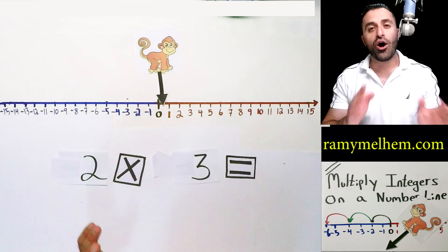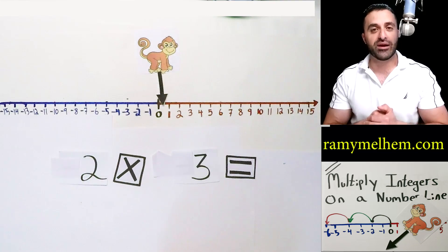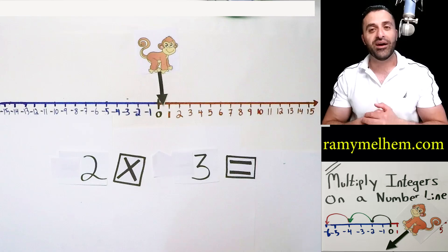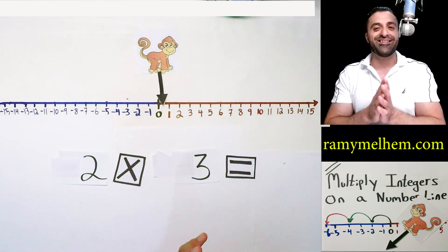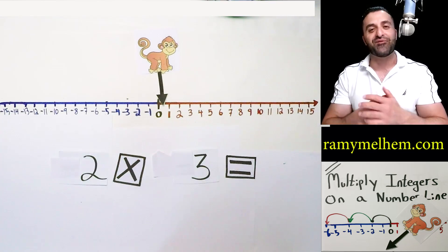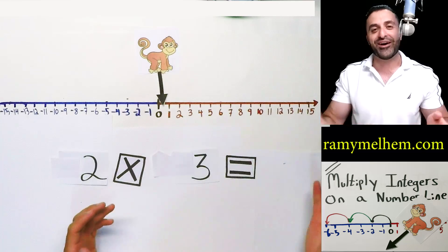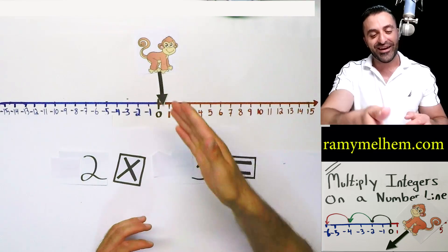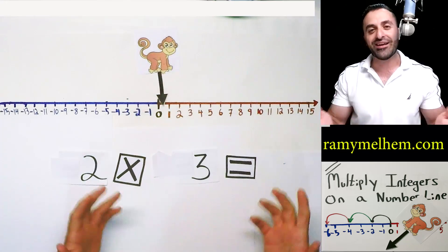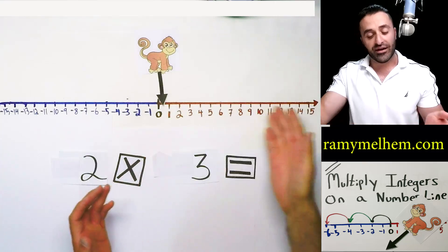You know what? This monkey, he already knows how to multiply regular numbers on a number line. That's not new to him. Hey, we got to keep secrets away from the monkey. Let's keep going on with this program now. So this monkey, he knows how to multiply regular numbers on a number line.